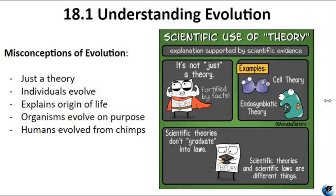Another misconception is thinking individuals evolve during their lifetime. Evolution occurs at the population level over generations, with traits changing on average, not in individuals. Evolution doesn't explain life's origin — it describes how species change and diversify over time, and life's origins are still being studied. Evolution isn't purposeful; it doesn't strive for improvement. Traits exist in populations, and advantageous ones increase through natural selection based on environmental changes. Furthermore, humans did not evolve from apes. The branching point where humans and apes — including chimpanzees, bonobos, gorillas, and orangutans — diverged from each other in the phylogenetic tree of life was an estimated 6 to 7 million years ago.